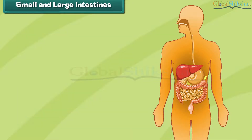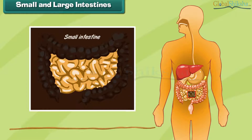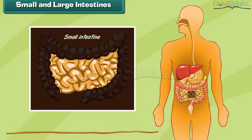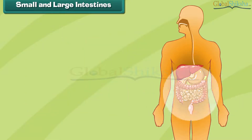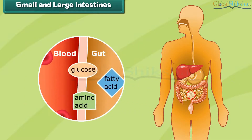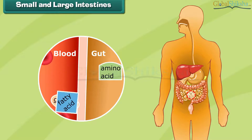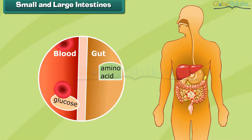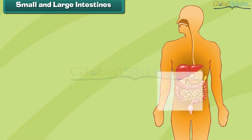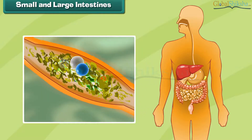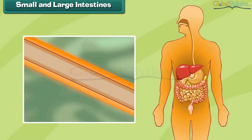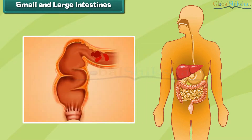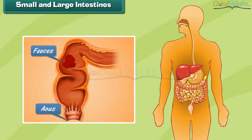Small and large intestines: The intestines are long tubes where the final breakdown and absorption of food occurs. The small intestine is a long, coiled tube where digested food is broken down completely and absorbed. The large intestine absorbs water from the undigested food and passes the waste food out from the body as feces.